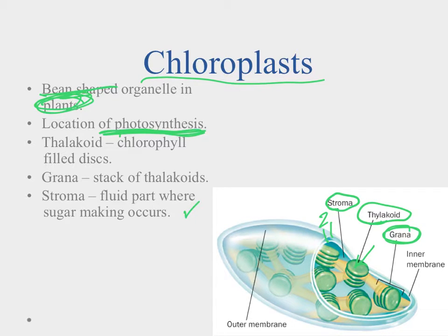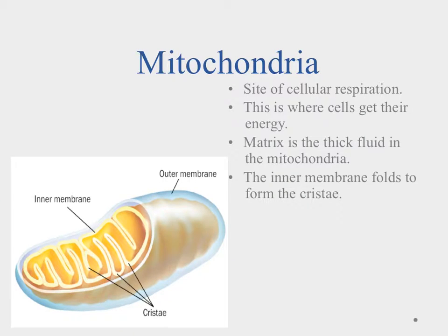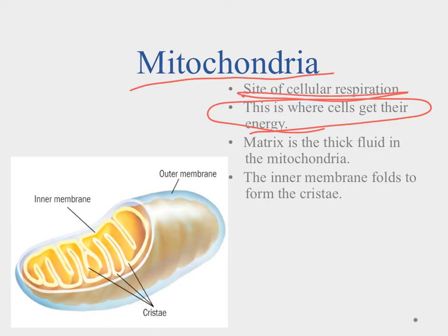So just a real quick tour of the chloroplasts — we'll talk about these a little bit more when we talk about photosynthesis. Next up are the mitochondria. The mitochondria is where cells get their energy because this is the site of cellular respiration. When we talk about cellular respiration a little later in the class, we'll talk a little bit more about where it happens in the mitochondria.